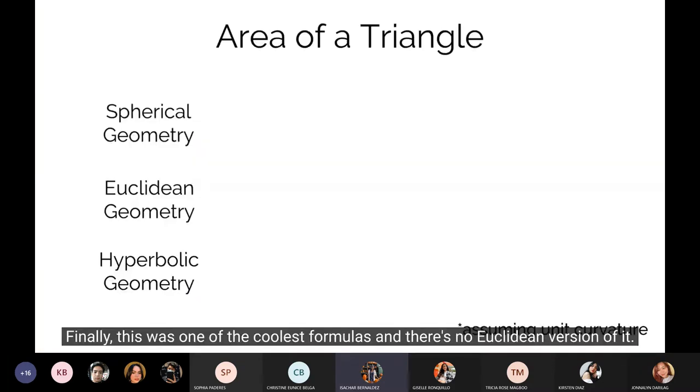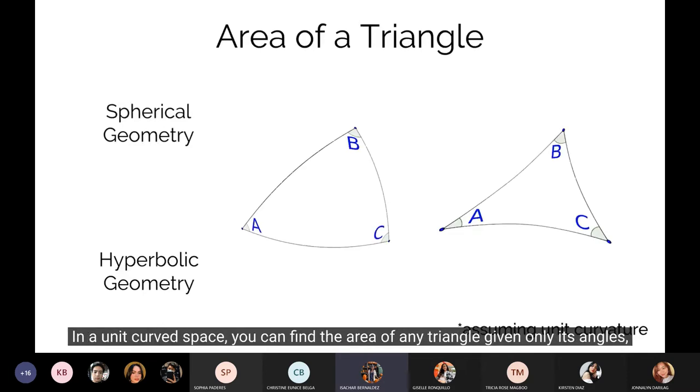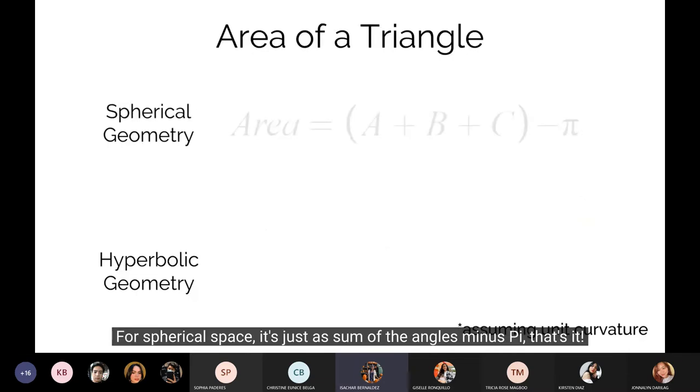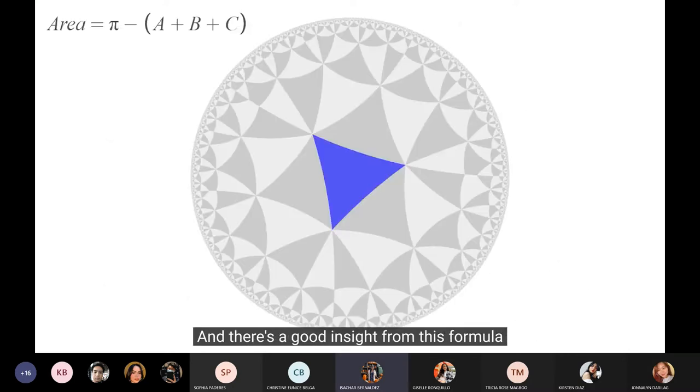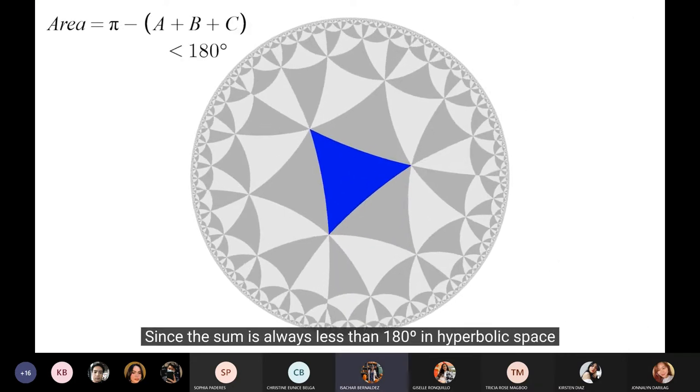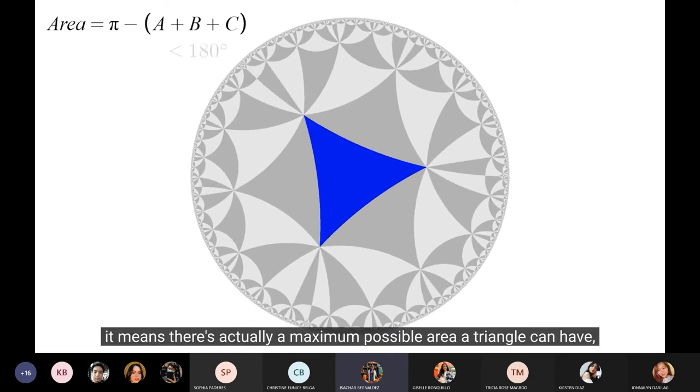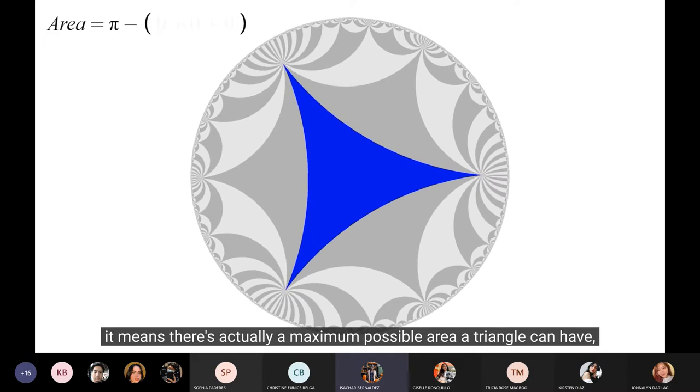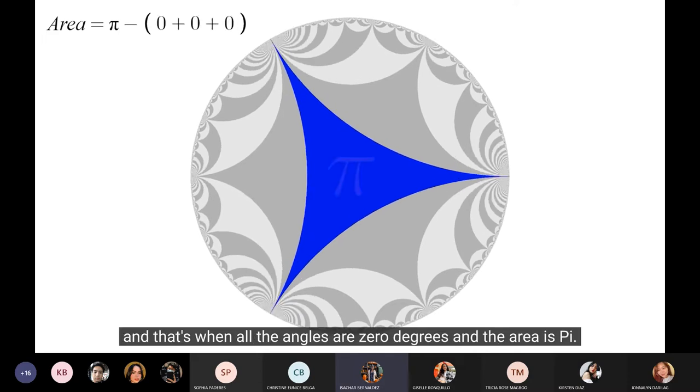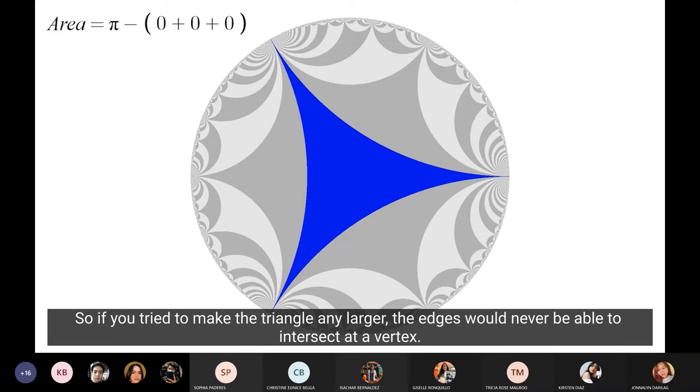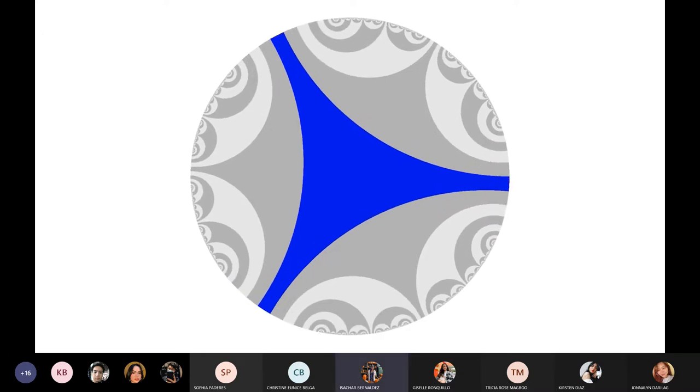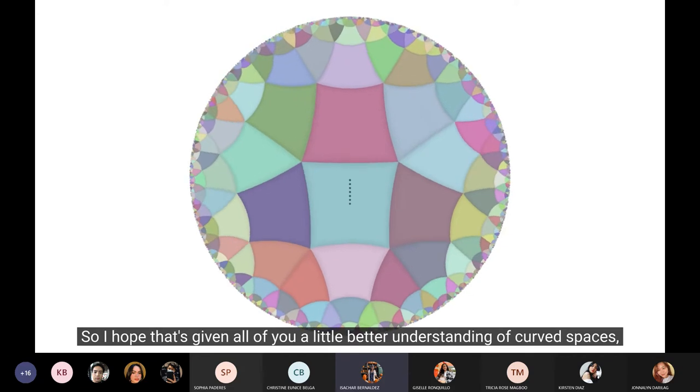And finally, this was one of the coolest formulas, and there's no Euclidean version of it. In a unit curved space, you can find the area of any triangle given only its angles. And the formula is so simple. For spherical space, it's just the sum of the angles minus π. That's it. In hyperbolic space, it's π minus the sum of the angles. Isn't that neat? And there's a good insight from this formula. Since the sum is always less than 180 degrees in hyperbolic space, it means there's actually a maximum possible area a triangle can have. And that's when all the angles are zero degrees, and the area is π. It happens because all lines eventually diverge. So if you tried to make the triangle any larger, the edges would never be able to intersect at a vertex.